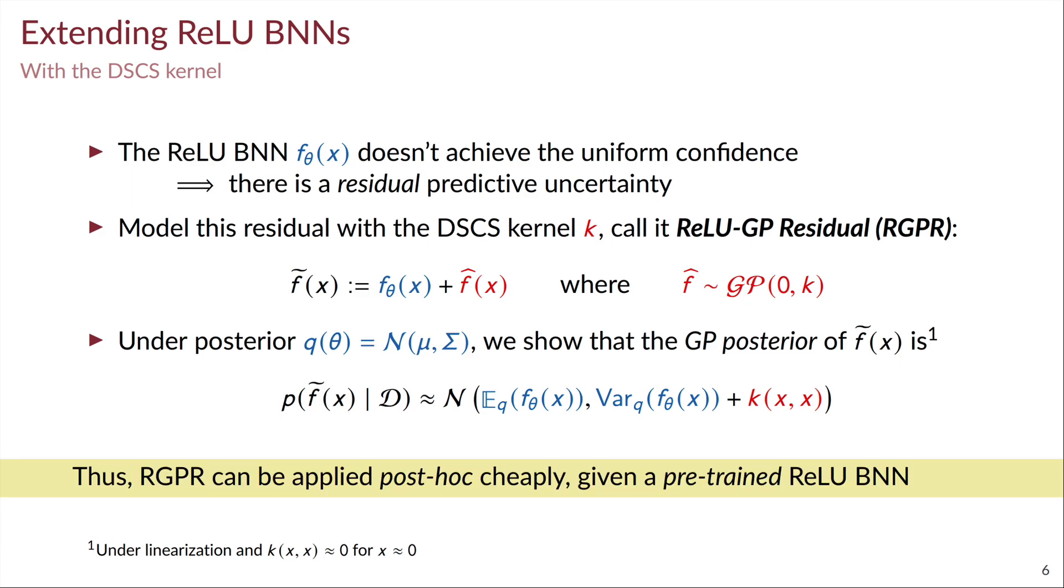And this means that RGPR can be done in a very cheap and post-hoc manner, assuming that we already have a pre-trained Bayesian neural network.